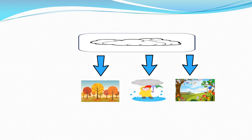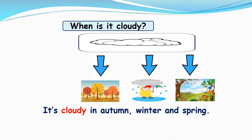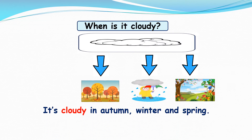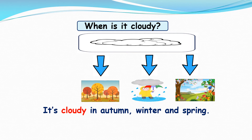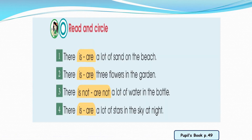When is it cloudy? It's cloudy in autumn, winter, and spring. Now open your book page 49 — read and circle.